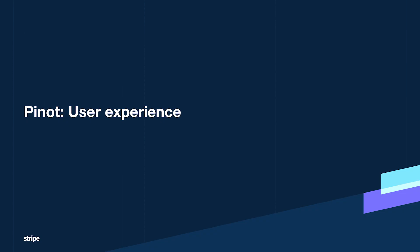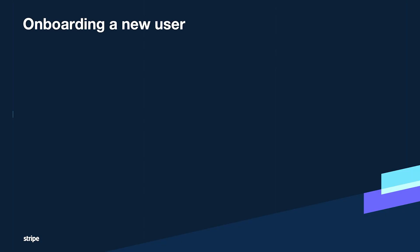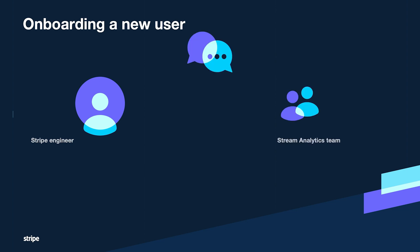Let's deep dive into what that user experience looks like. Say you're a Stripe engineer who wants to build a user-facing analytics dashboard. You've heard about this cool OLAP system the Stream Analytics team offers, so you come talk to us. We first make sure that Pinot is actually the right tool for your product. Once that's determined, we ask: how much QPS do you expect? What are your latency, storage, and freshness requirements? Some users come from a batch query world where they're querying Presto day-to-day, so they can describe what they want with simple SQL.